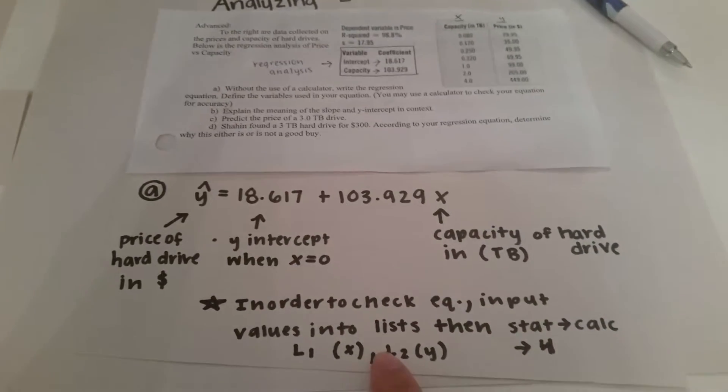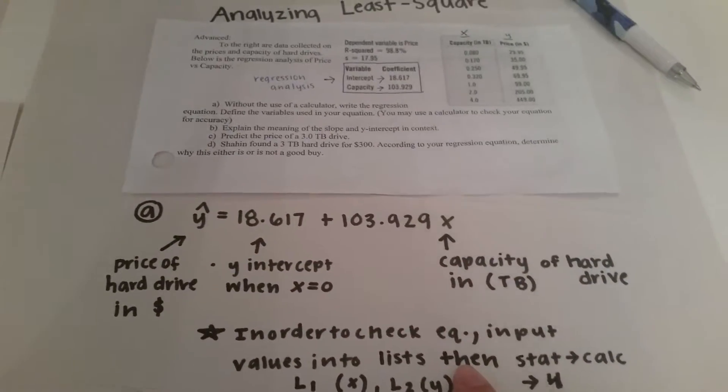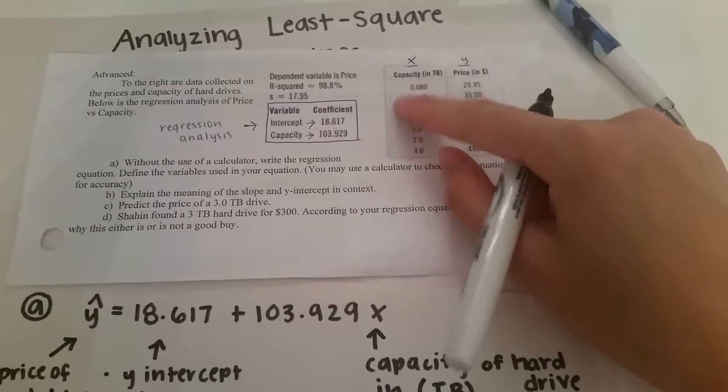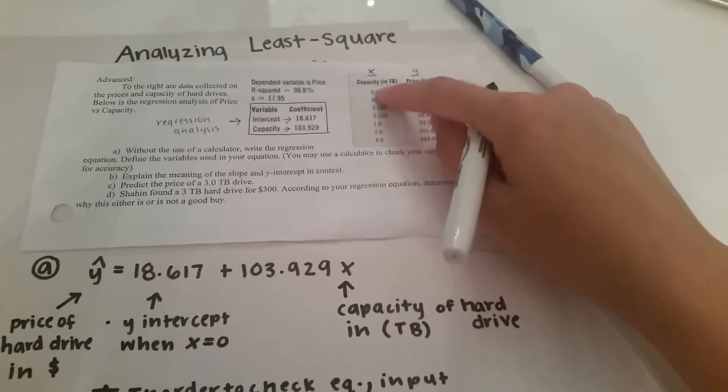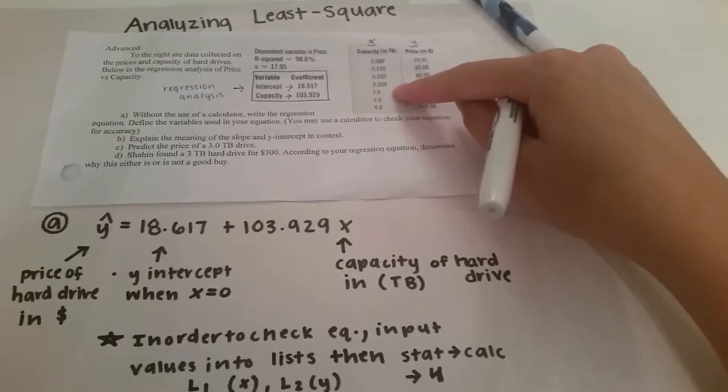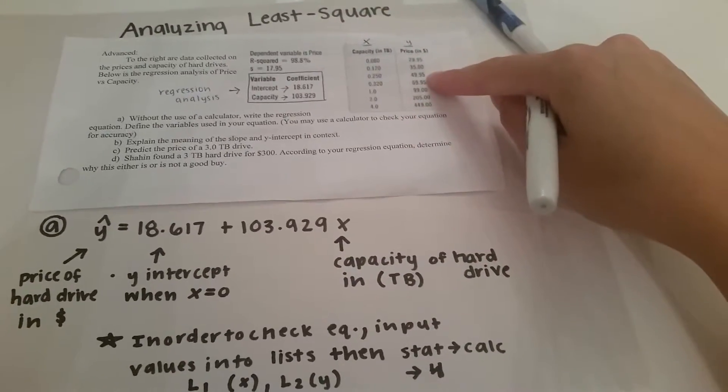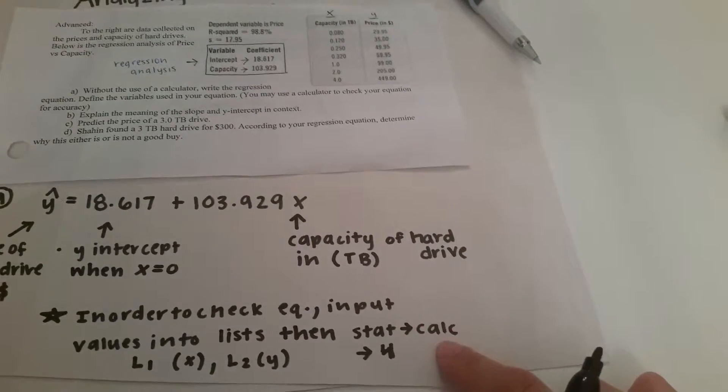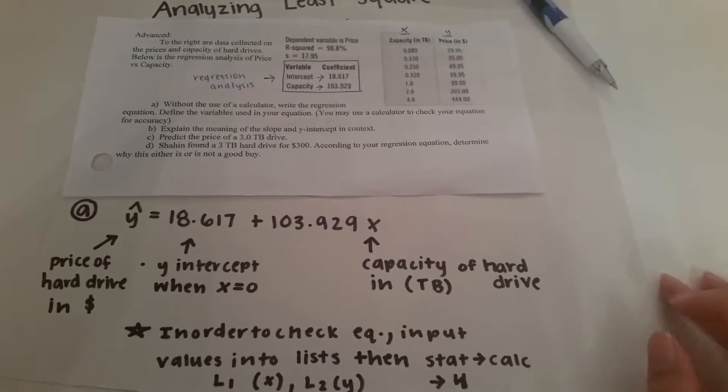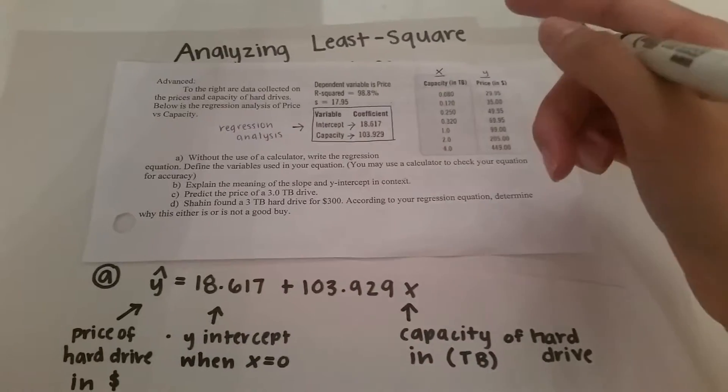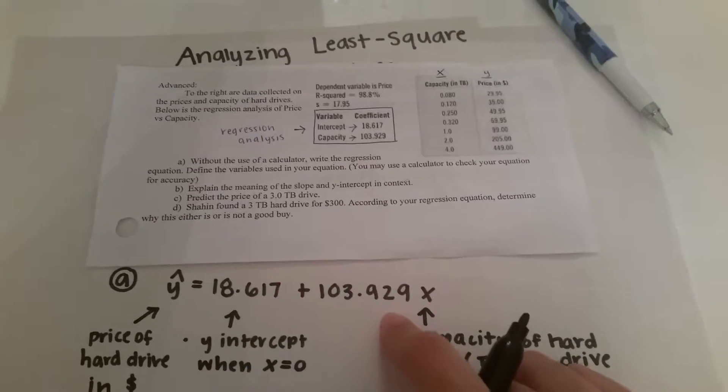Now in order to check this equation in the calculator you will input these values into the L1 x chart and then these into the y values. Then you will press stat calc four to calculate the least regression line and then it will validate that this is indeed the correct equation.